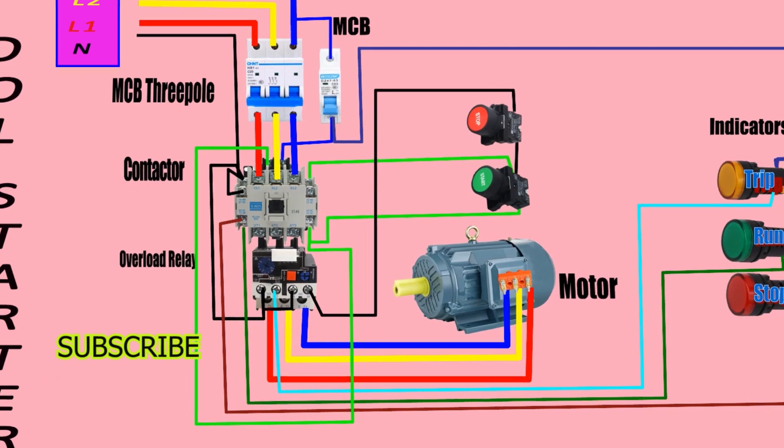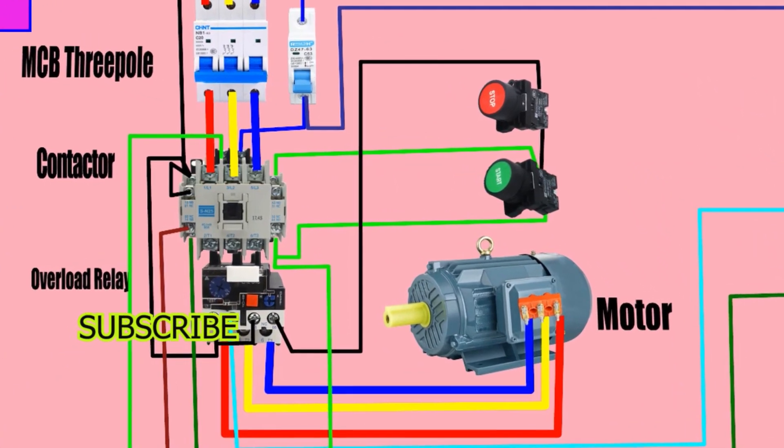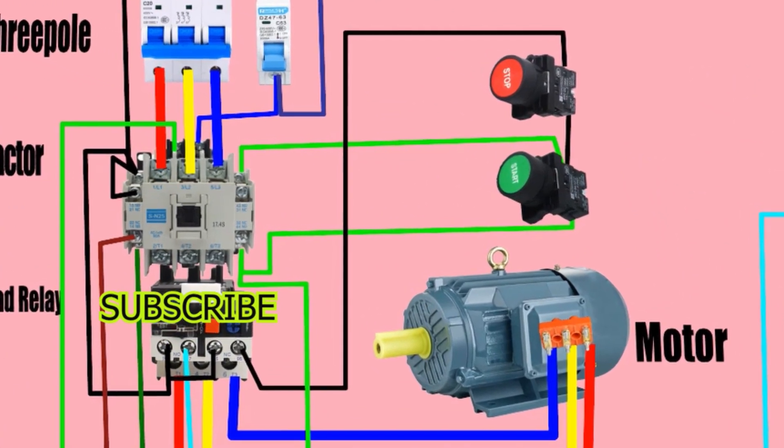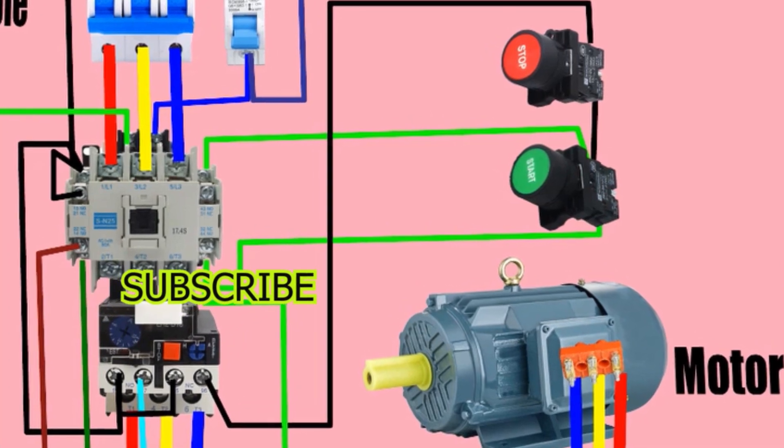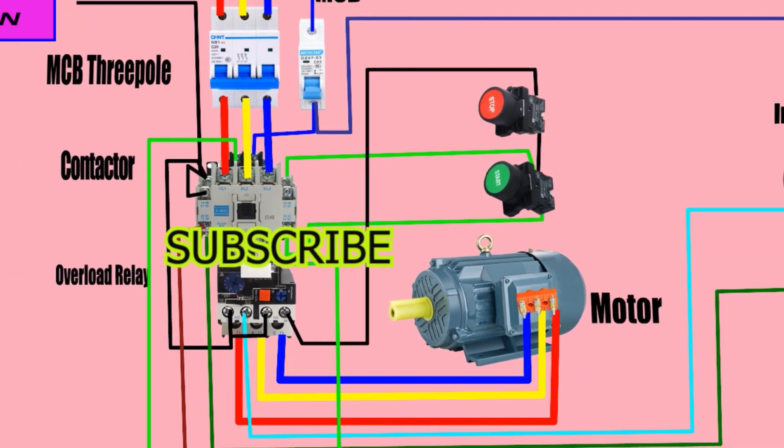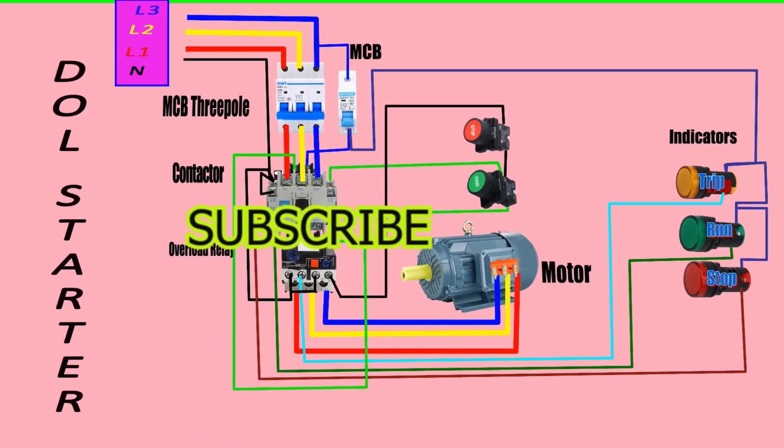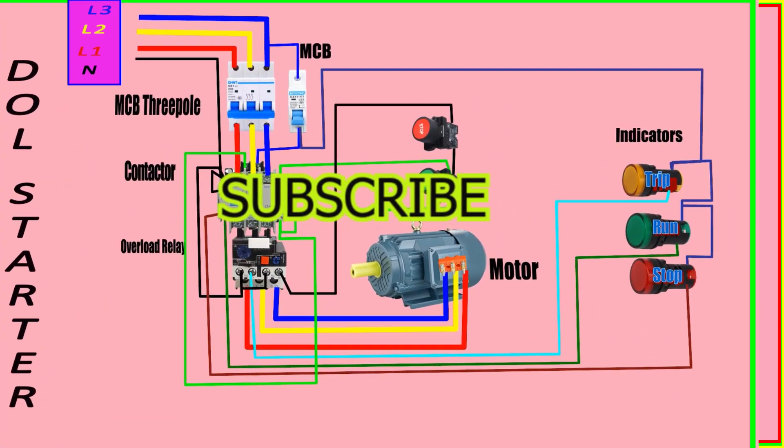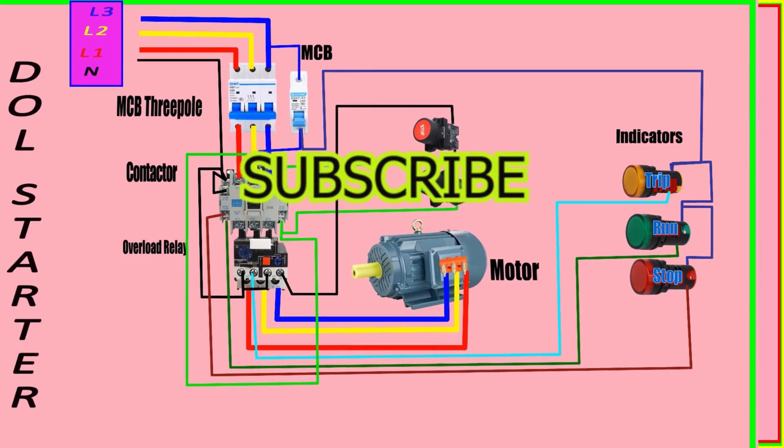When we press the start push button, the contactor closes, allowing the motor to be connected directly to the power supply. The overload relay monitors the current drawn by the motor and will trip the starter if the current exceeds a predetermined value.